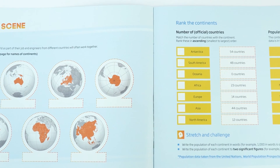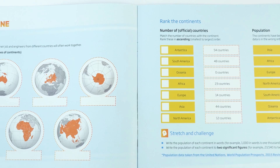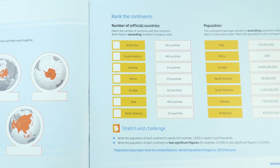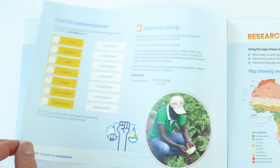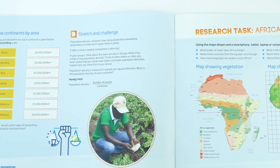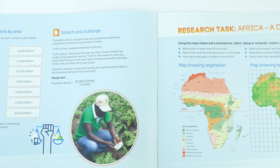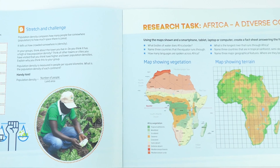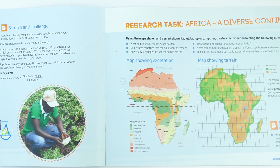There are things which have links to geography — for example, looking at the continents and how that relates to the population of each one. Then students go through another research task which focuses a bit more on Africa, thinking about where these engineering tasks fit in the bigger picture.